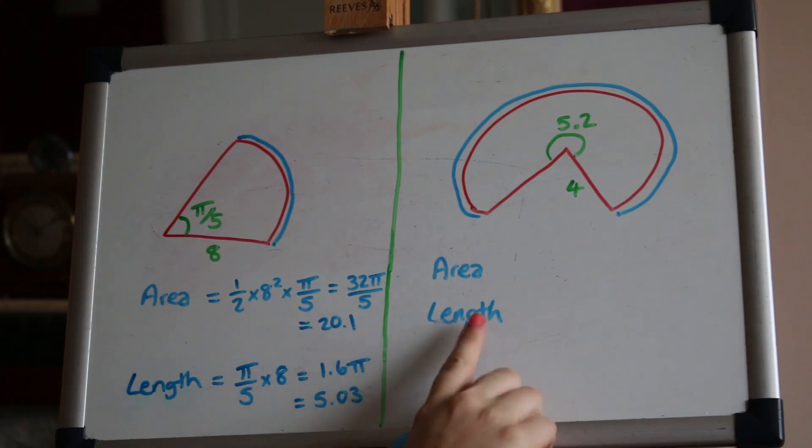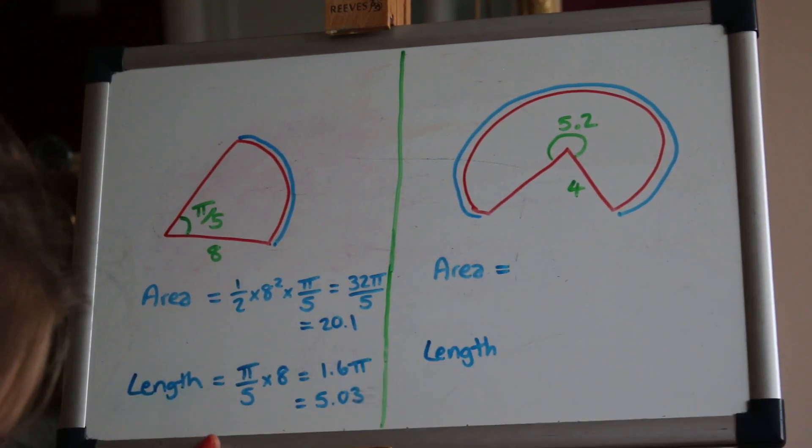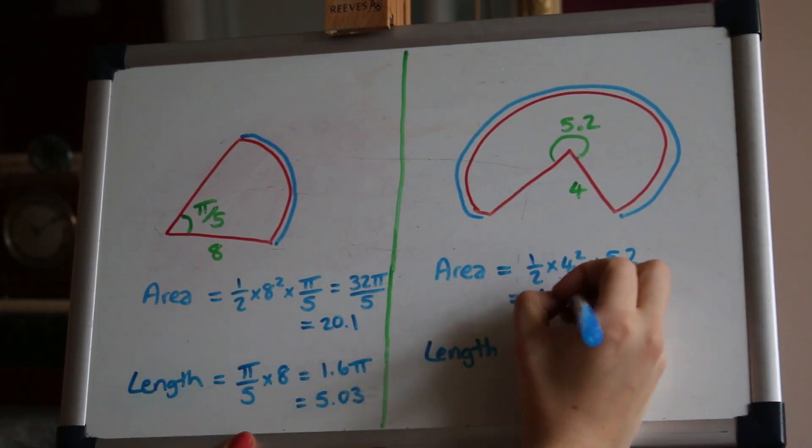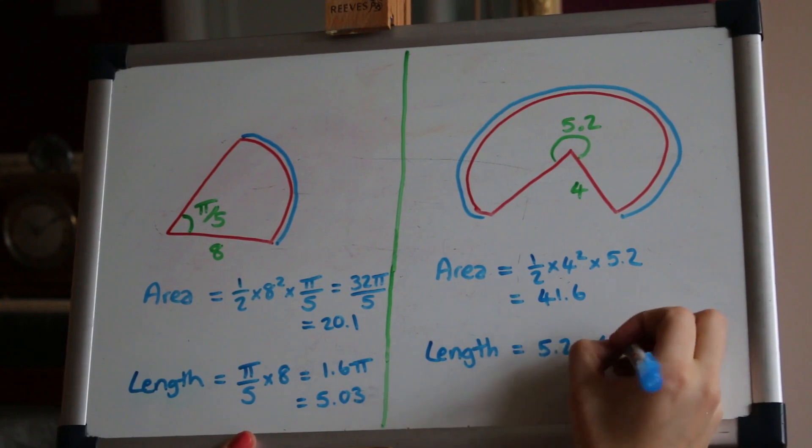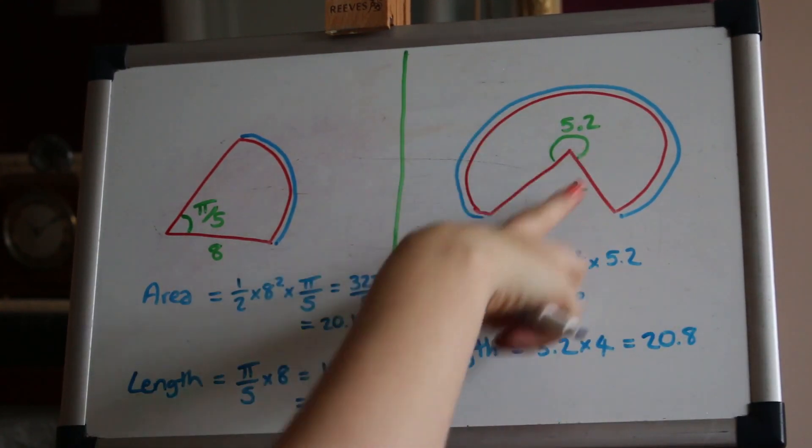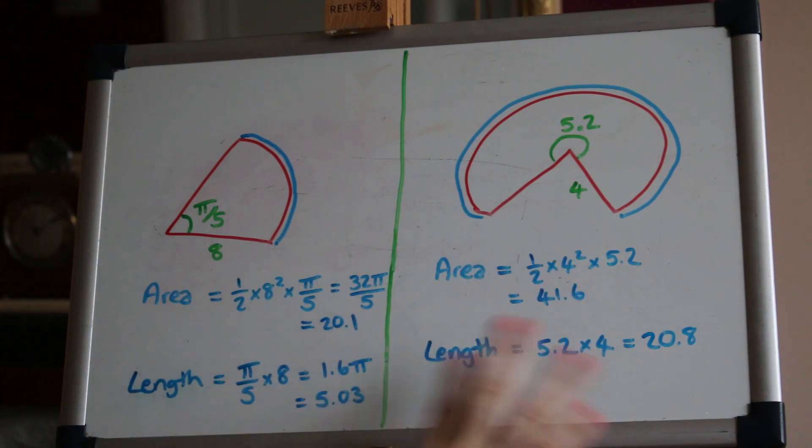Let's try these ones now. So this one, even though it looks different because it's a major sector, it works exactly the same way. Half r²θ and rθ multiplied together and I've left those answers as decimals. Well done if you've got those right.